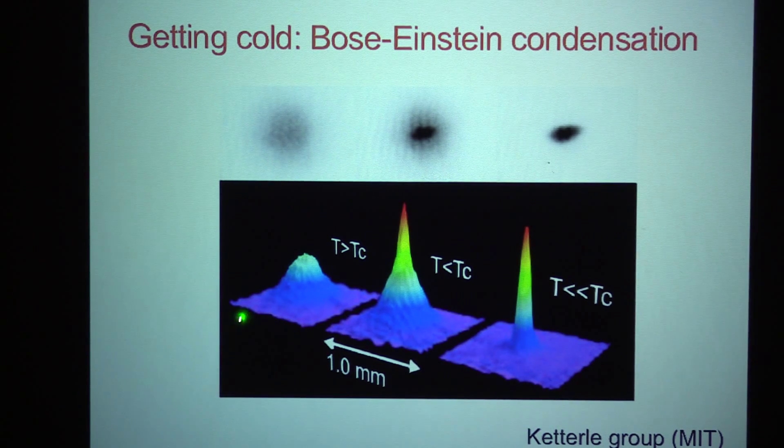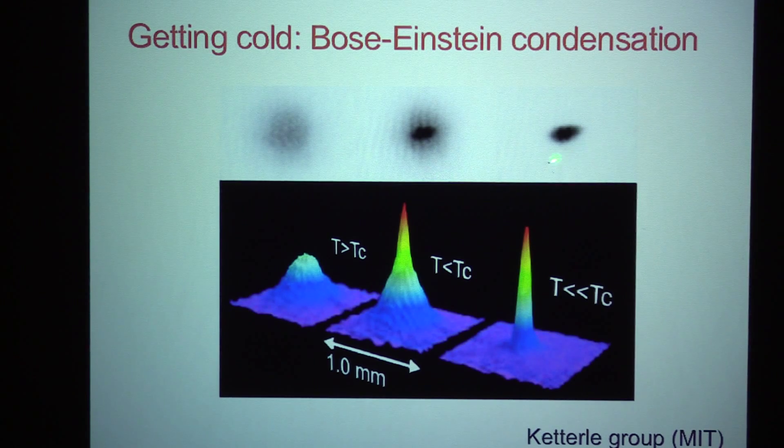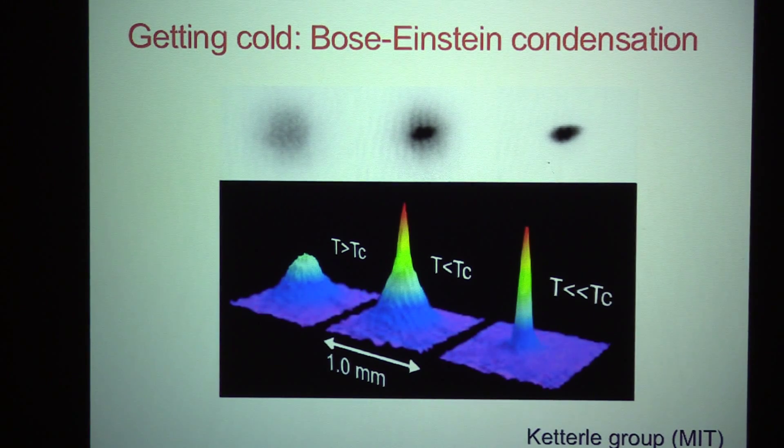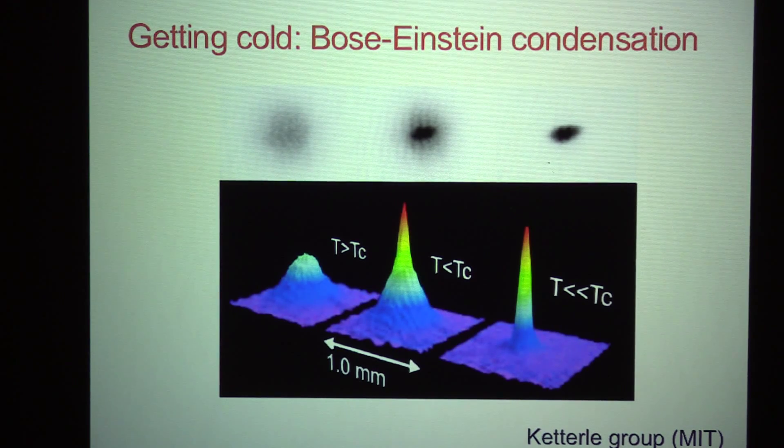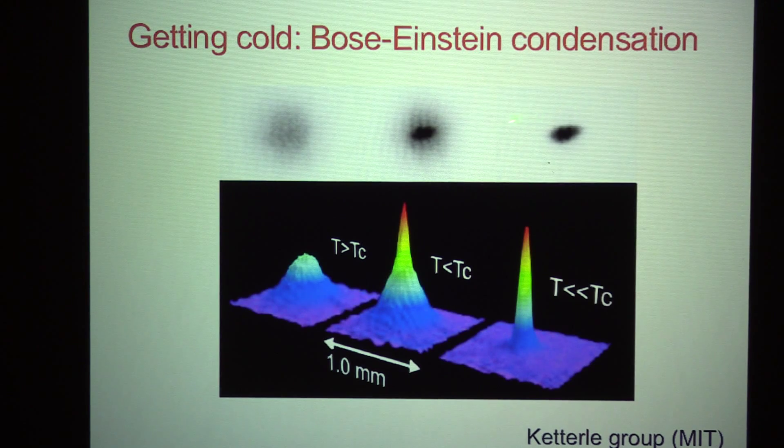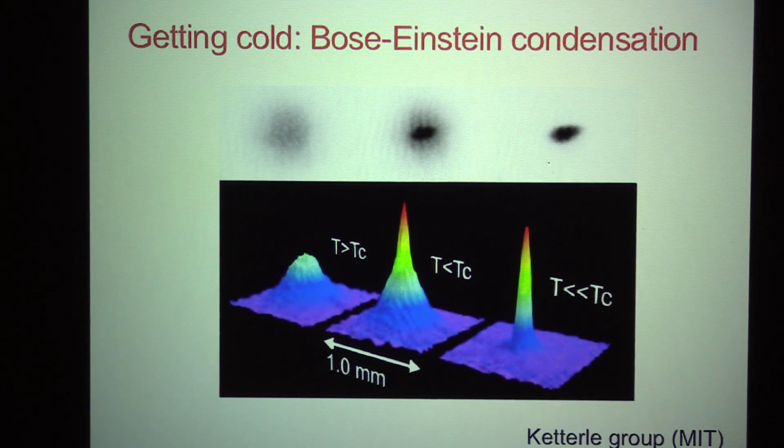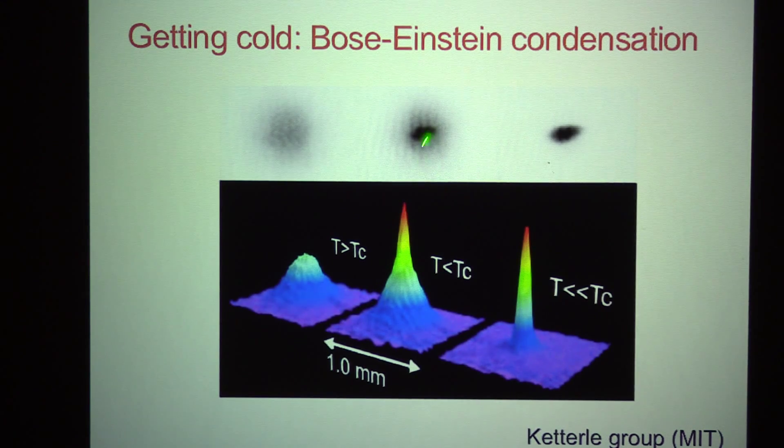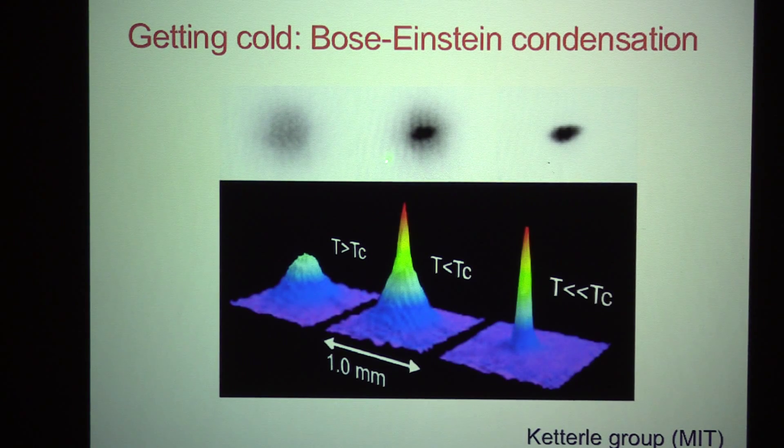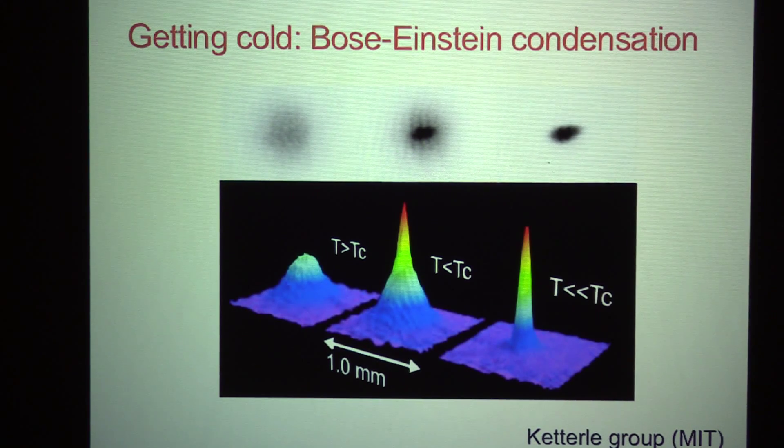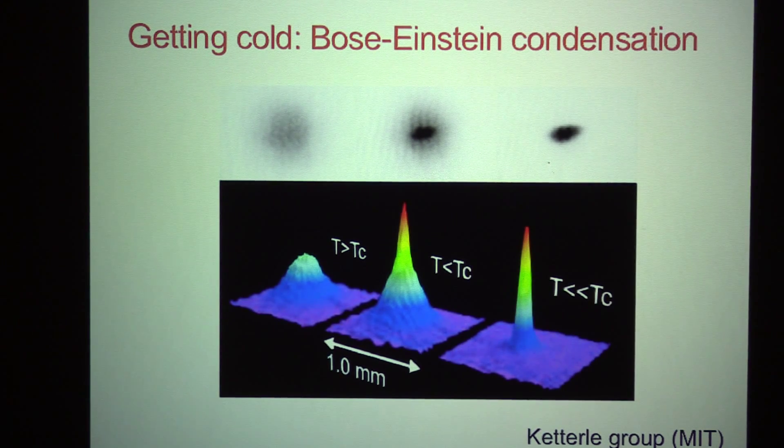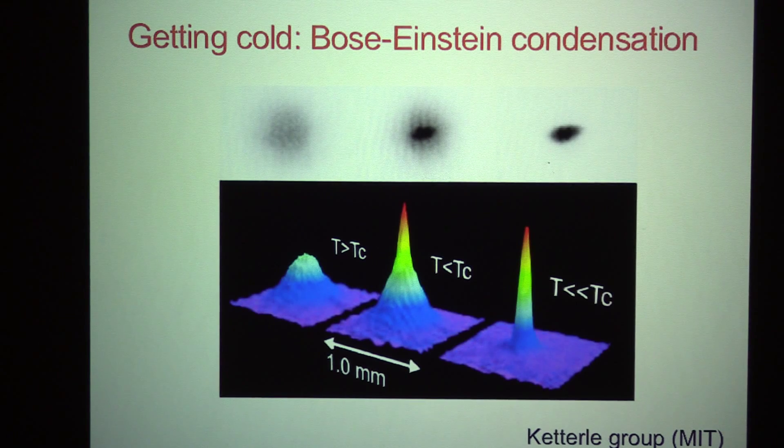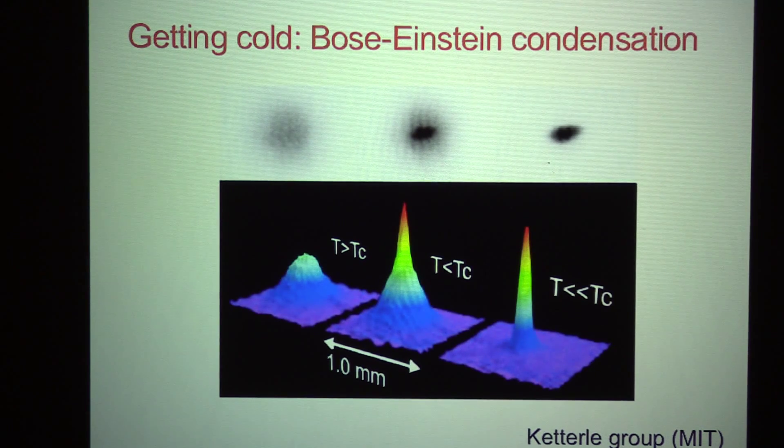And for example, in these pictures from the Ketterle group at MIT, what they saw was, as you cool the gas, there's something interesting happening in these time-of-flight pictures. At high temperatures, they see this shadow, which has a Gaussian shape, which reflects the fact that in momentum space here, what you're seeing is basically the Maxwell-Boltzmann distribution. As you cool the gas further, there's a dense core that appears. This dense core is basically, once you've crossed the critical temperature, there's a macroscopic occupation of the ground state, the Bose-Einstein condensate. And those atoms don't move much during the time of flight, so there appears this dense core that coexists with the thermal cloud. And then if you cool further, you can achieve a pure Bose-Einstein condensate.